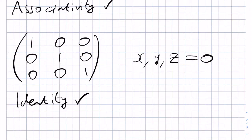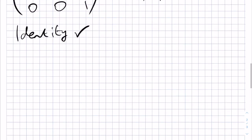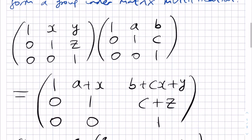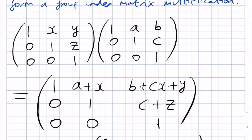Finally, we need to show that we have inverses. That is, for a matrix 1, X, Y, 0, 1, Z, 0, 0, 1, we can find a corresponding inverse matrix that is also of the required form, in the Heisenberg group.